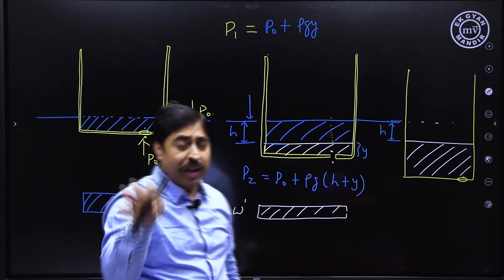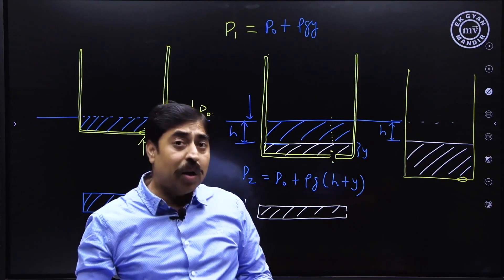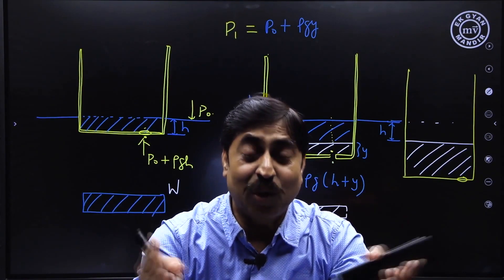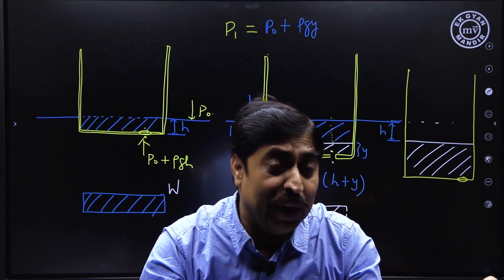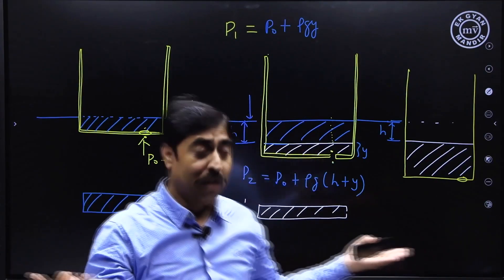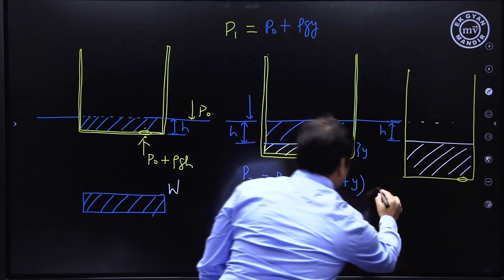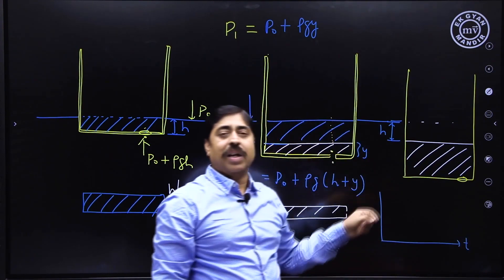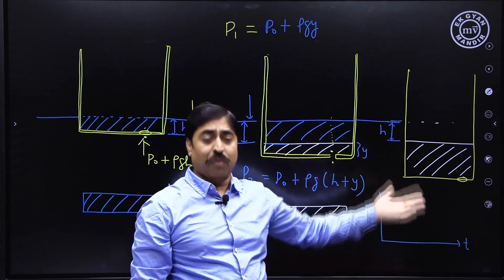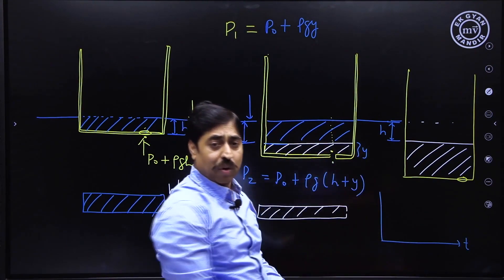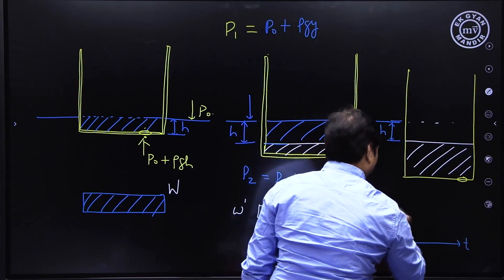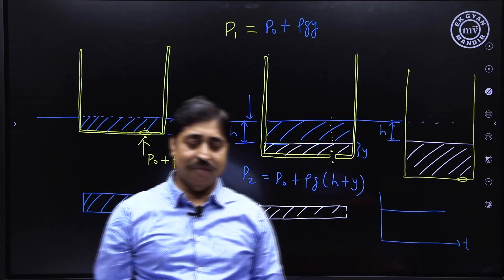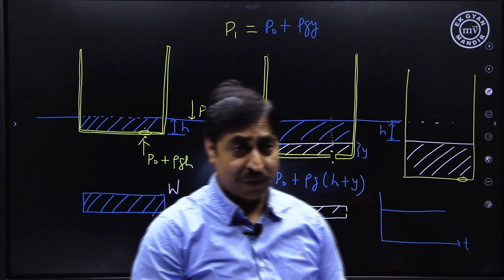Since the pressure difference between the outside and inside of the hole remains constant at ρgh, water enters into the boat at a constant rate. There is no change in the rate of water flow into the boat. So the graph — rate of water flow on the y-axis versus time on the x-axis — will be a flat straight line.